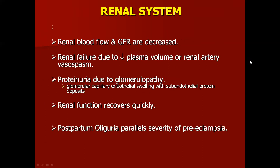In the renal system, renal blood flow and GFR are decreased. Renal failure occurs due to decreased plasma volume or renal artery vasospasm. Proteinuria results from glomerulopathy — there is edema of the glomerulus leading to subendothelial protein deposits. Renal function recovers very quickly after delivery, but postpartum oliguria indicates severe preeclampsia, as its severity correlates with oliguria.